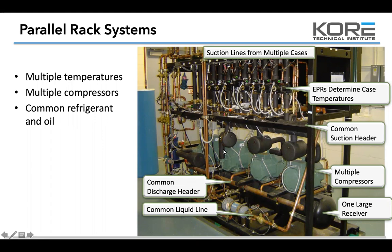Stage one compressor may have an unloader or it may be a variable speed compressor. These are Bitzer Octagon compressors. I like Bitzer compressors because they use a bigger piston and a shorter stroke, so they're a little more robust for taking some liquid than some other brands. Copeland Discus is also very robust when taking a little liquid. Rack systems use a common refrigerant oil, usually visible through the oil separator — that blue cylinder on the end.